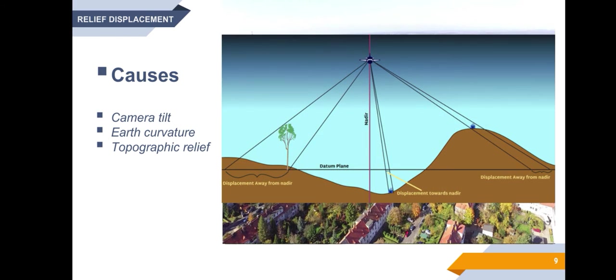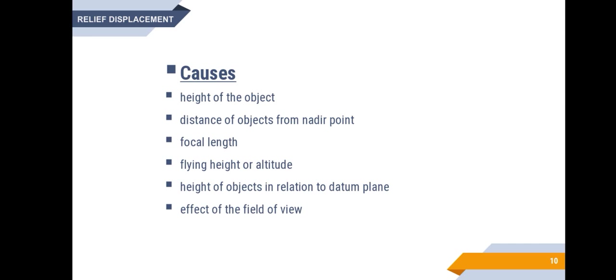Topographic relief can have a great effect on displacing image features. The amount of image displacement increases on high degree slopes, and feature displacement also increases radially away from the photo center. Apart from this, the factors which affect relief displacement are: height of the object, distance of objects from the nadir point, focal length, flying height or altitude, height of objects in relation to datum plane, and effect of the field of view.